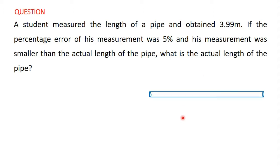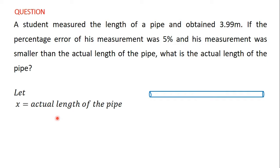So let's assume that this is the pipe that the student measured its length. We have been told that the student measured the length and got 3.99, but in his measurement there was a percentage error of five percent, and the measurement of 3.99 is smaller than the actual length of the pipe. This means that the actual length of the pipe is longer than 3.99. Since we are looking for the actual length, we are going to let x represent the actual length of the pipe.